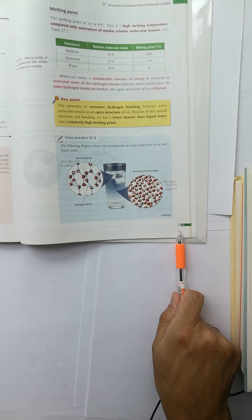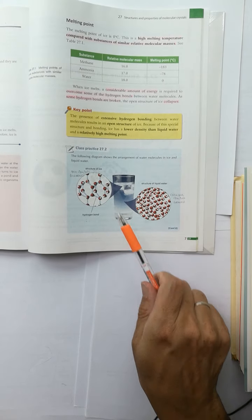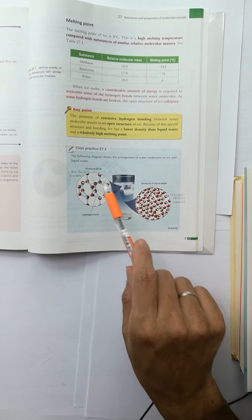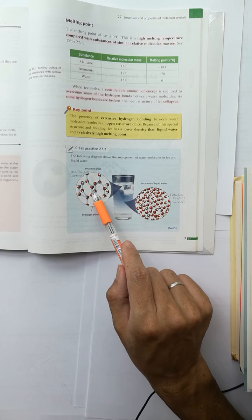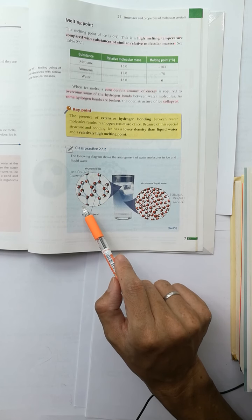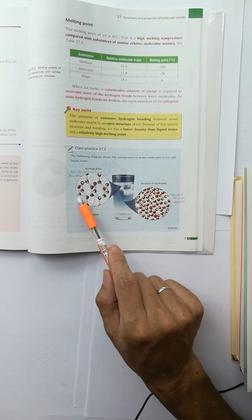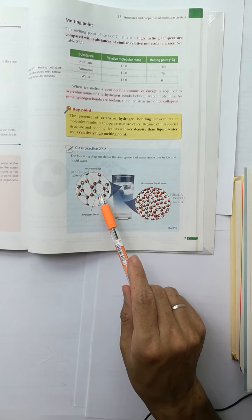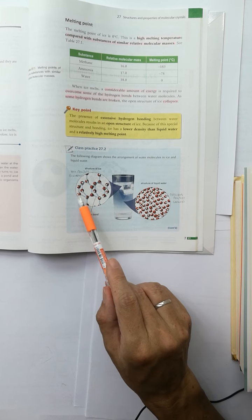You can see that the ice has the water particles arranged orderly with a lot of hydrogen bonds formed, and there are many spaces among them.